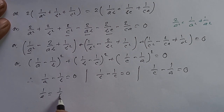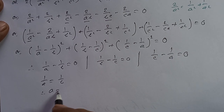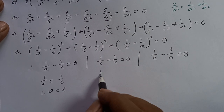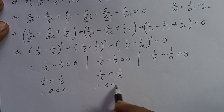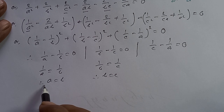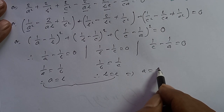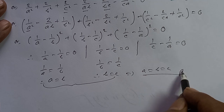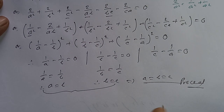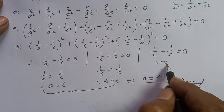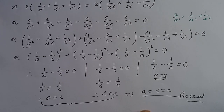Since each square term is non-negative and their sum is zero, each must individually equal zero. So 1 by a equals 1 by b, and 1 by b equals 1 by c. Therefore a equals b equals c.